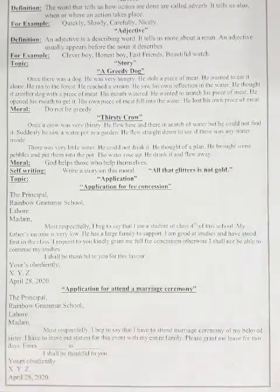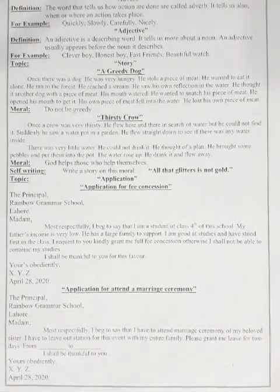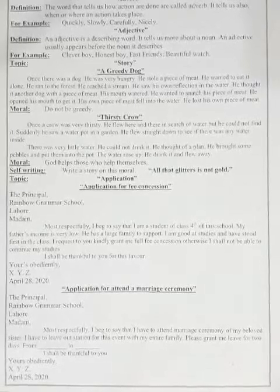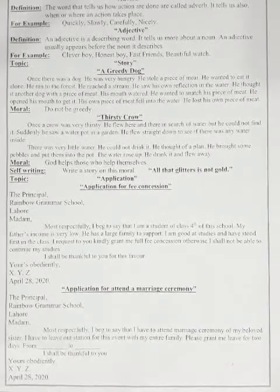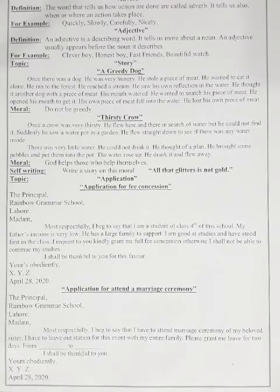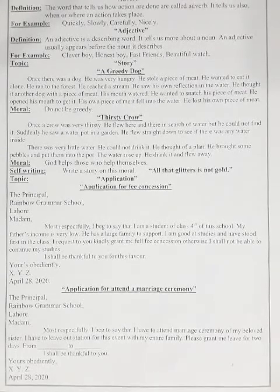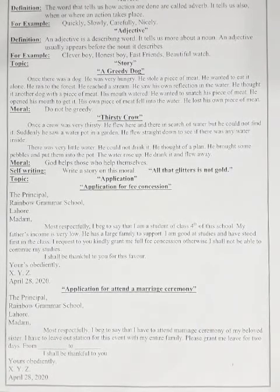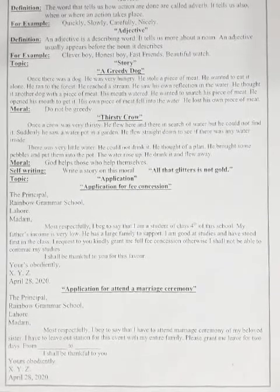He opened his mouth to get it — his own piece of meat fell into the water. He lost his own piece of meat. ٹھیک ہے بچوں — ایک لالچی کتا تھا، وہ گوشت کا ٹکڑا چراتا ہے کیونکہ وہ بہت بھوکا ہوتا ہے۔ وہ چاہتا ہے کہ اکیلے کھا لے، جنگل کی طرف جاتا ہے۔ راستے میں ندی پڑتی ہے، ندی میں اپنا عکس نظر آتا ہے — سمجھتا ہے ایک اور کتا ہے اس کے پاس بھی گوشت کا ٹکڑا ہے۔ اس کے منہ میں پانی آتا ہے، وہ منہ کھولتا ہے وہ پیس لینے کے لیے۔